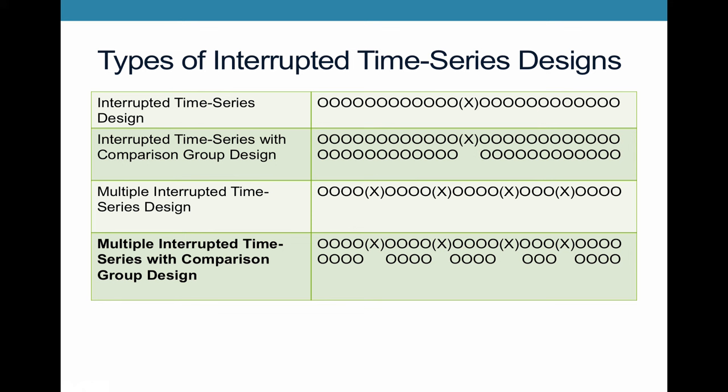And then finally, you can look at this multiple interrupted time series design while also adding in a comparison group. So getting at combining the best of both worlds of this one and this model, where you're able to make these comparisons and see over time, do you see that kind of relationship in both groups? And if not, then you're able to make some sort of causal claims, even if you're not able to fully get to an experimental outcome.